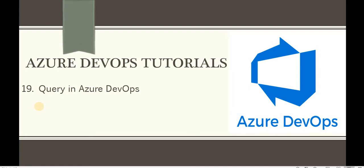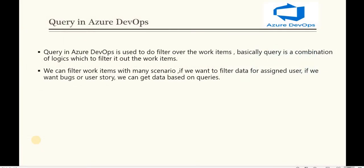Welcome to the Azure DevOps tutorial series. In this tutorial, we will create queries in Azure DevOps and see how queries are useful for the Azure DevOps board. Basically, a query in Azure DevOps is used to filter work items. Suppose we have a lot of work items related to bugs, epics, features, and user stories, and we want to filter or retrieve specific records from the Azure DevOps board — in that scenario, we use queries.